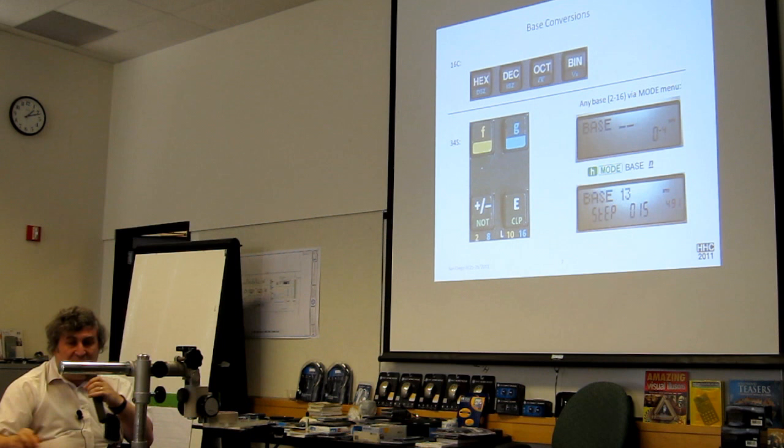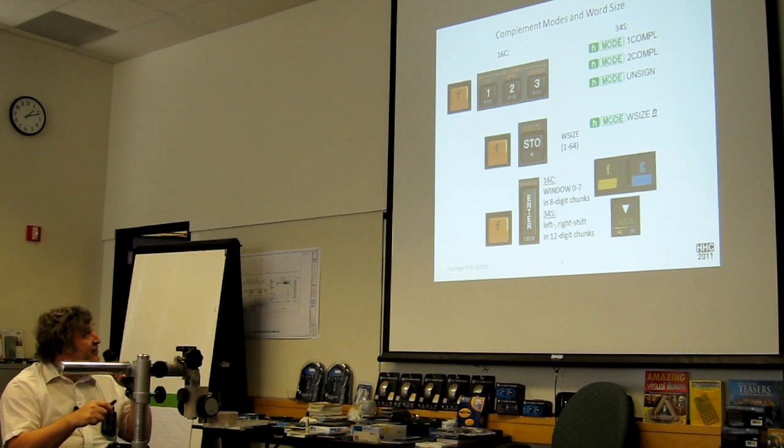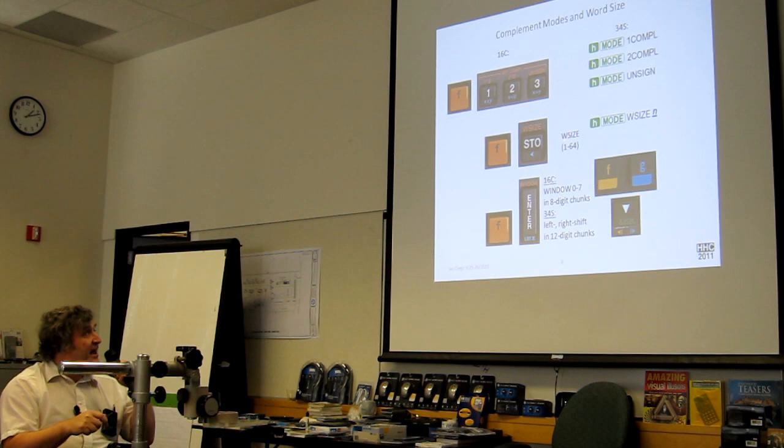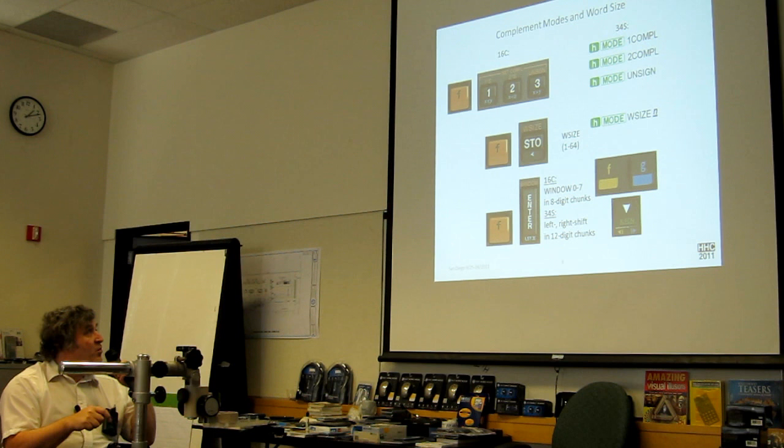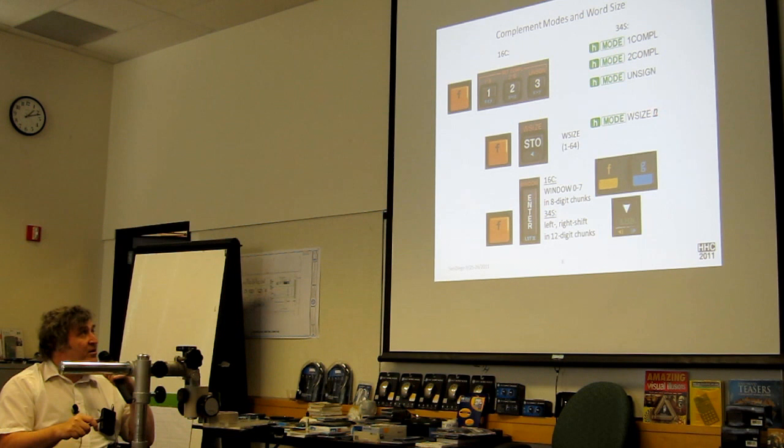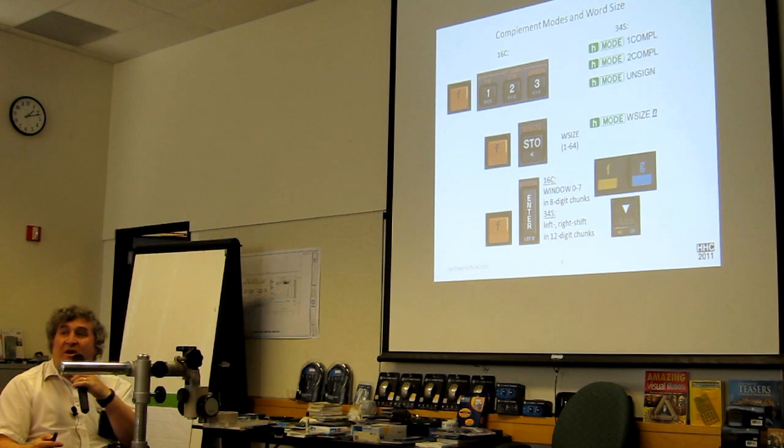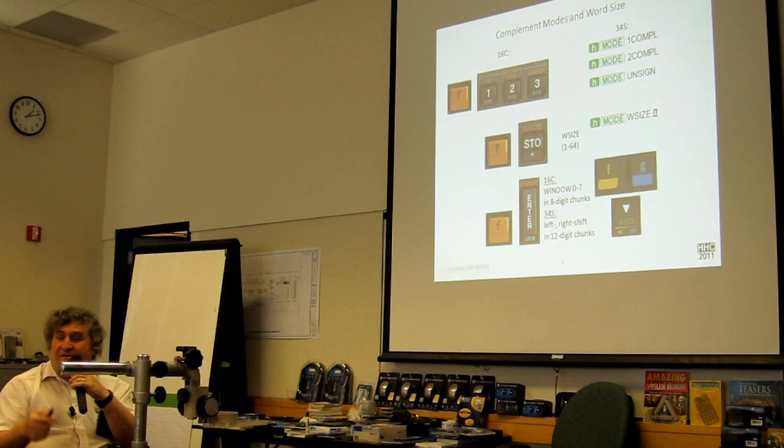Complement modes on the 16, you have on the F shifted key plane on the 34S, these are individual modes. You can set the word size between 1 and 64 bits in a similar way. On the 16, the word size was taken as an argument off the stack. On the 34, it's in line, right in the function itself. Although, if you wanted to take it off the stack, you could use indirect, word size indirect, whatever.